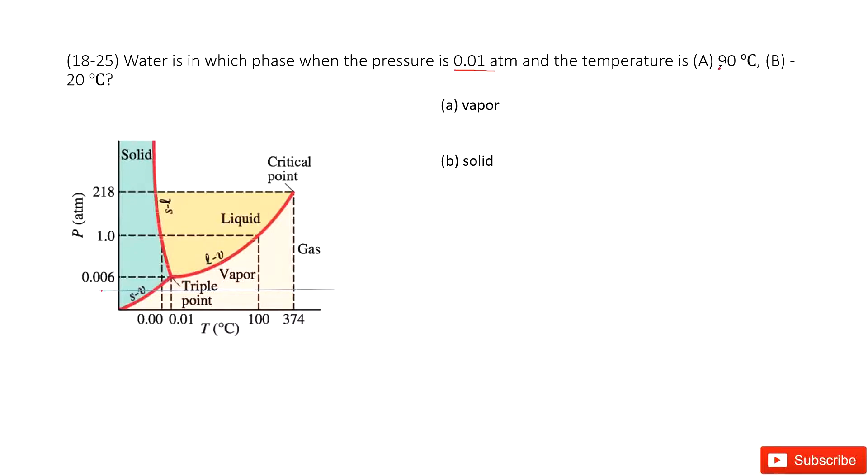And then for A case, it's 90 centi-degree. 90 centi-degree is vapor.